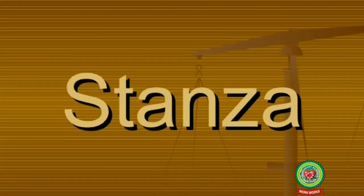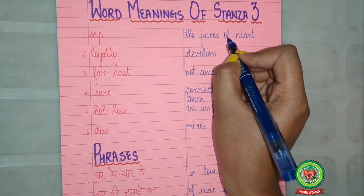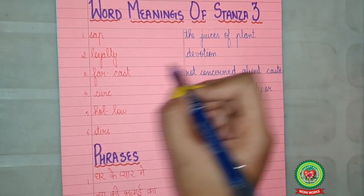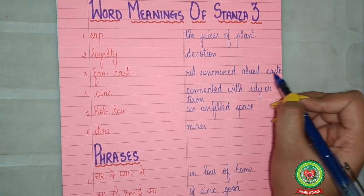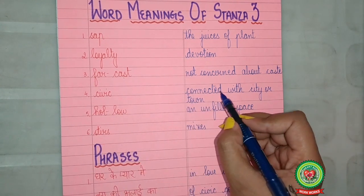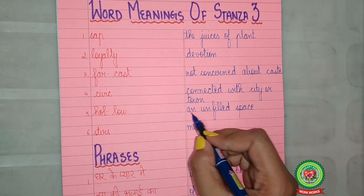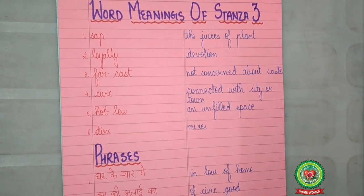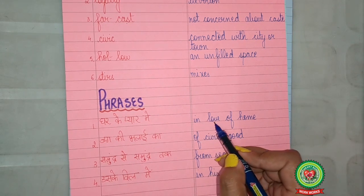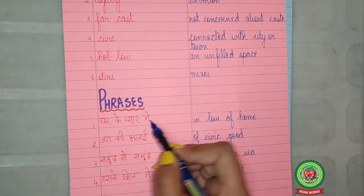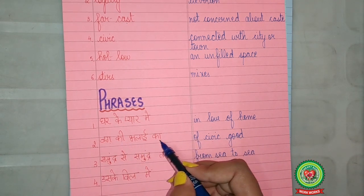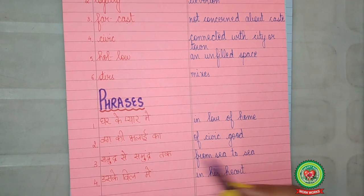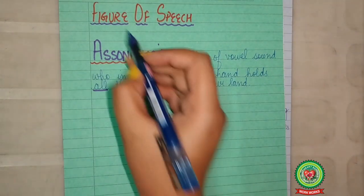Note down the important words with their meanings and phrases of stanza 3. Sap means the juices of a plant. Loyalty means devotion. Far-caste means not concerned about caste. Civic means connected with city or town. Hollow means an unfilled space. Stir means mixes. The phrases are: 'In love of whom' — Ghar ke pyaar mein; 'Of civic good' — Jag ki bhalai ka; 'From sea to sea' — Samudra se samudra tak; 'In his heart' — Uske dil mein.